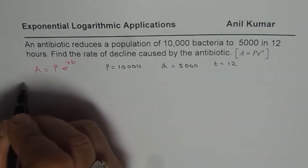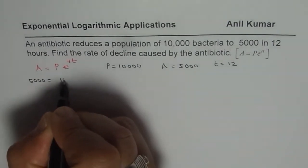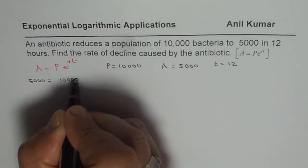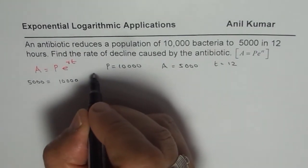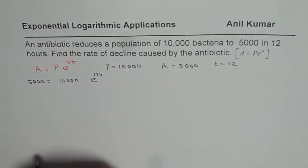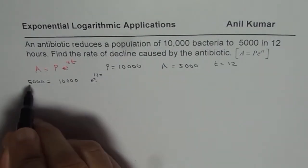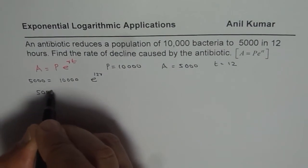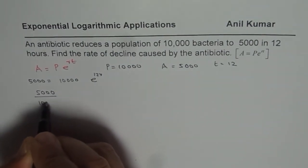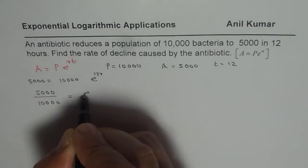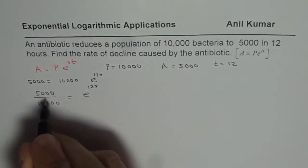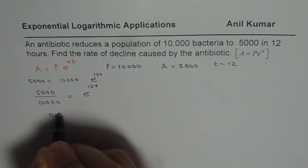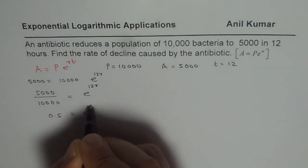I get 5,000 equals 10,000 times e to the power of 12R. Now we can divide 5,000 by 10,000, so 5,000 divided by 10,000 equals e to the power of 12R. That equals one-half, or you can write 0.5 equals e to the power of 12R.